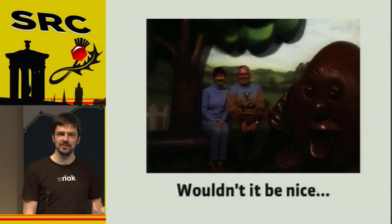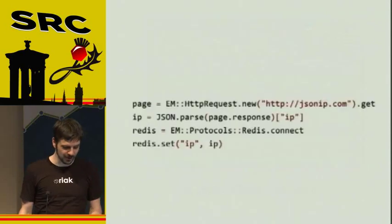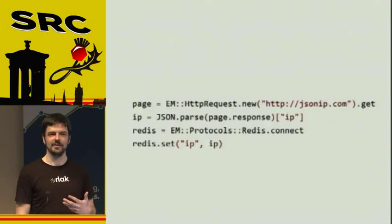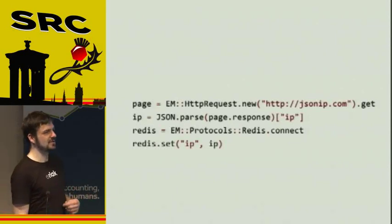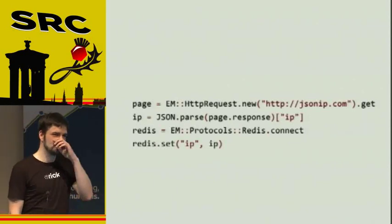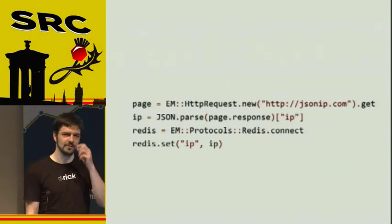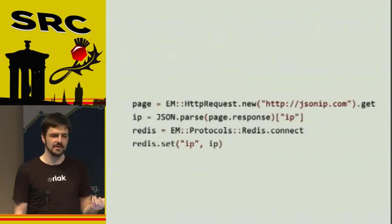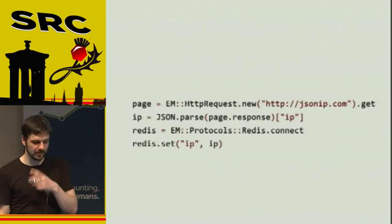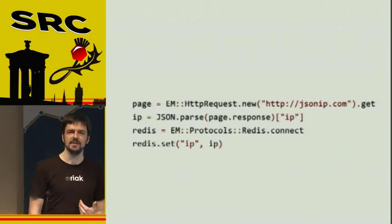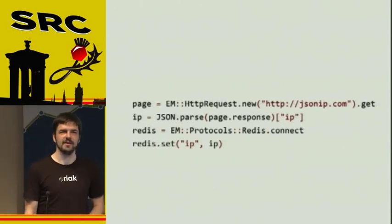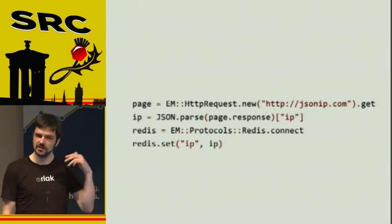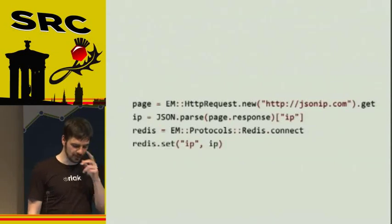Wouldn't it be nice if we could just stick to our usual procedural model — like in the old days when we just fetch a request and wait for that, then when the data comes in, return it to store in a local variable, then parse the JSON that comes back, store it in Redis, and all in much more readable code?